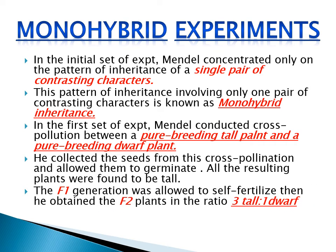Coming to the monohybrid experiment, in the initial stage of the experiment Mendel studied only a single pair of contrasting characters. A pattern of inheritance involving only one pair of contrasting characters is called monohybrid inheritance. In this first set of experiments, Mendel conducted cross-pollination between pure breeding tall plants and pure breeding dwarf plants.